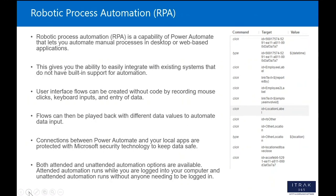Robotic Process Automation is a capability of Power Automate that lets you automate manual processes in desktop or web-based applications. It gives you the ability to integrate with existing systems that don't already have a built-in API or way to automate them. You can record user interface flows — mouse clicks, keyboard inputs, and data entry — then customize those flows and play them back with different data values. All connections between Power Automate and your local apps are protected with Microsoft security technology, and both attended and unattended automation options are available.